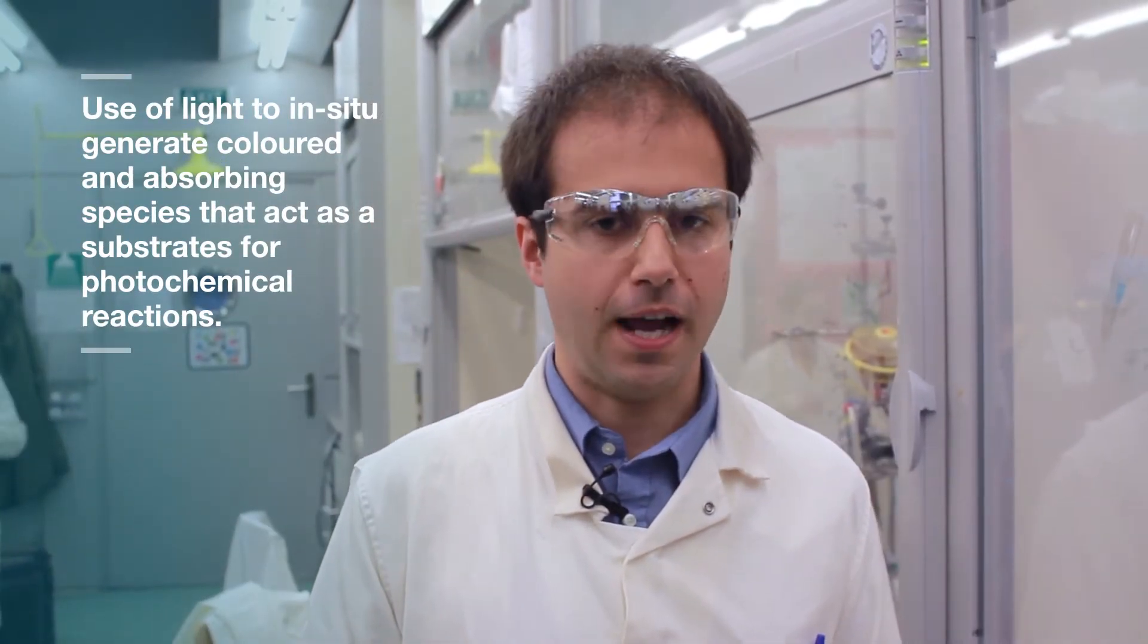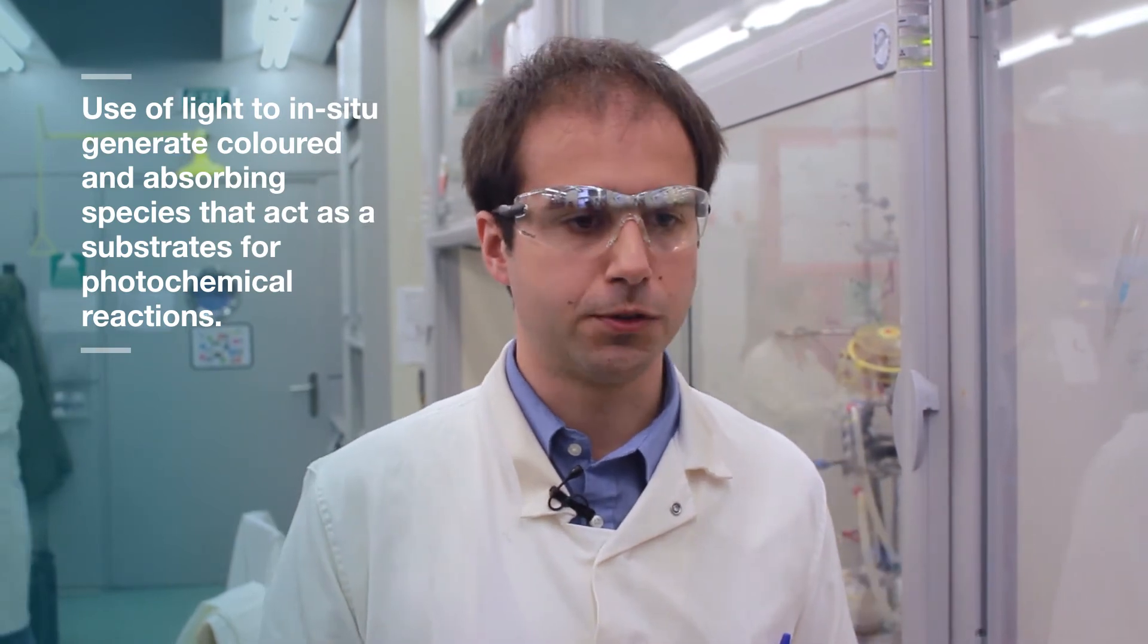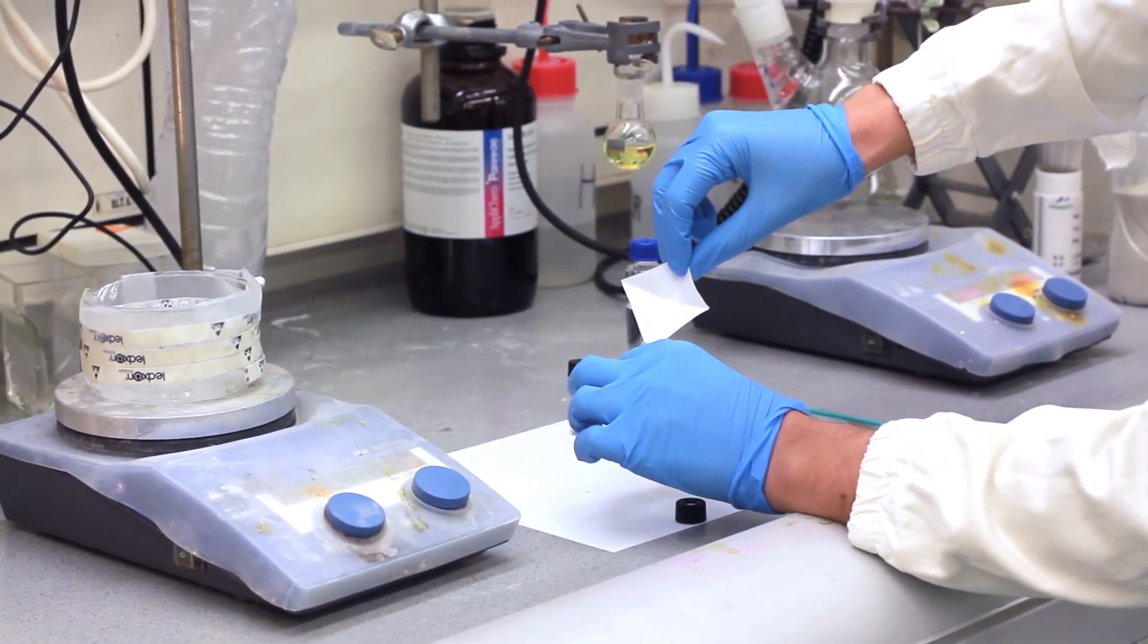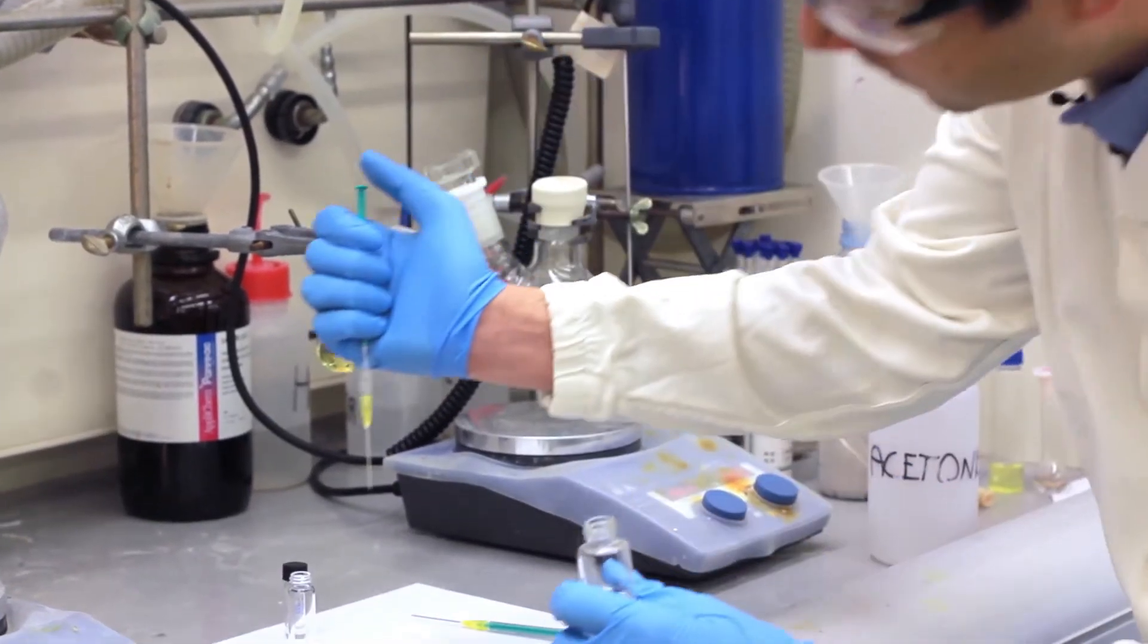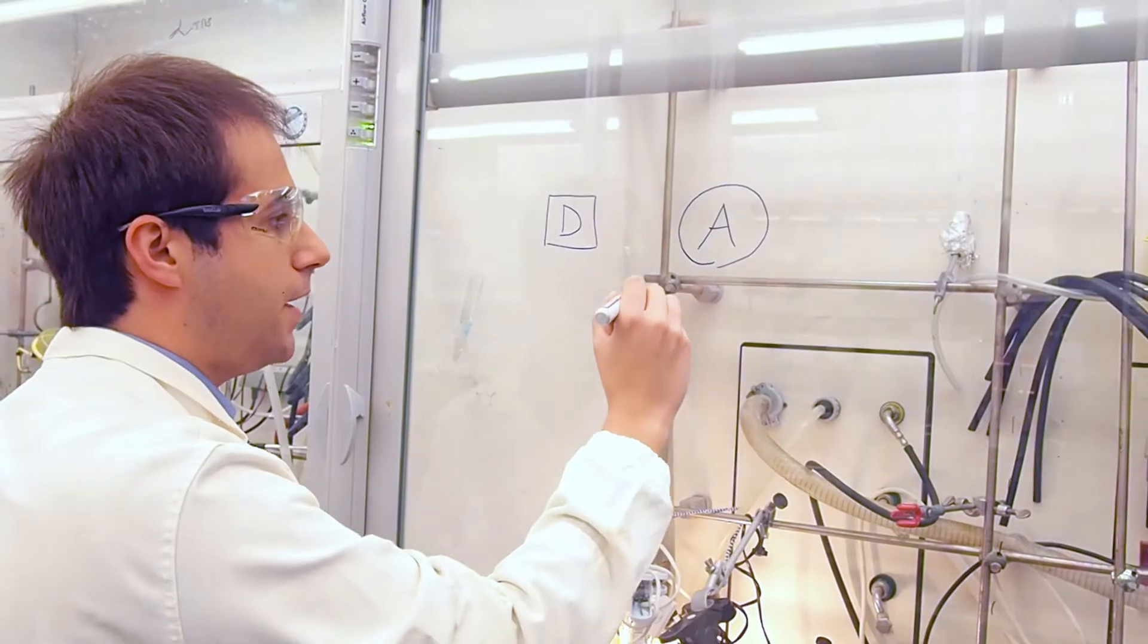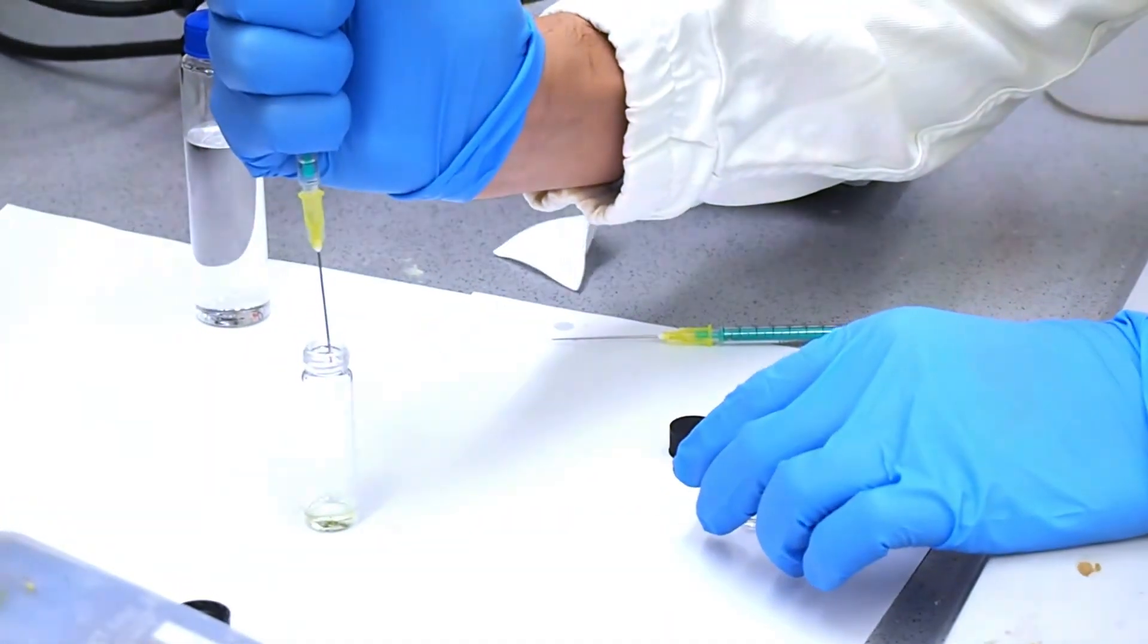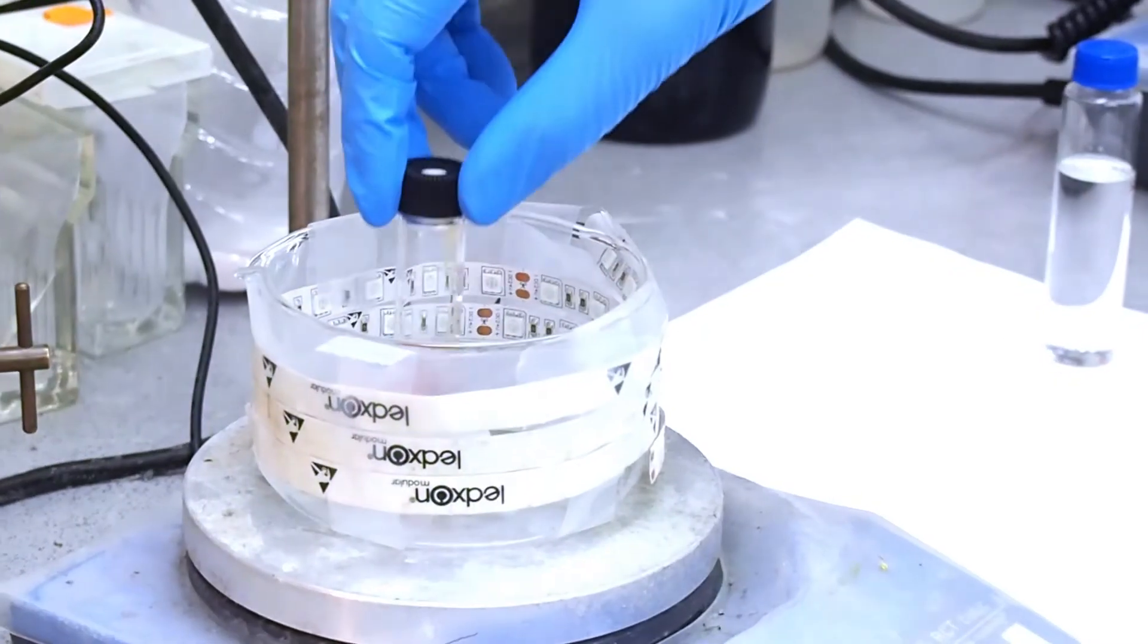In our group we are not only able to use light to promote photochemical reactions from colored compounds, but we can also in-situ generate colored and absorbing species that act as substrates for our photochemical reactions. In particular, by mixing one electron-rich compound that we call a donor with an electron-poor compound called an acceptor, which are both colorless, it is possible to generate a colored association complex.